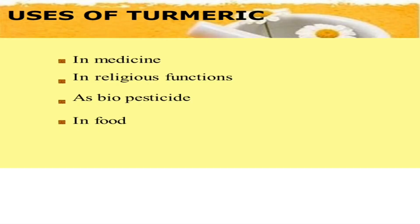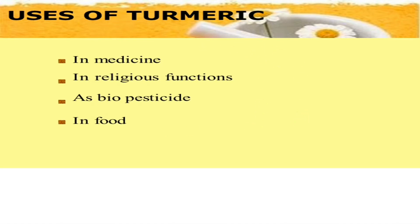Uses of turmeric. Turmeric is used for medicinal purposes, in religious functions, as a biopesticide, and in food. These are some major uses of turmeric.